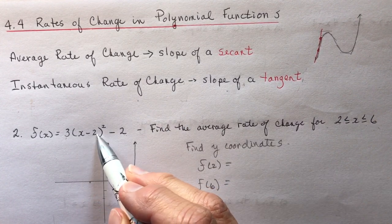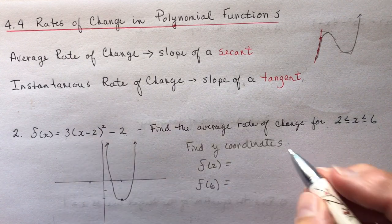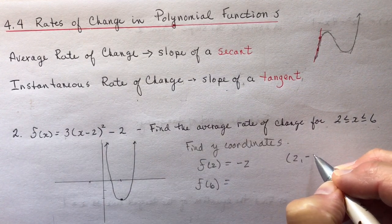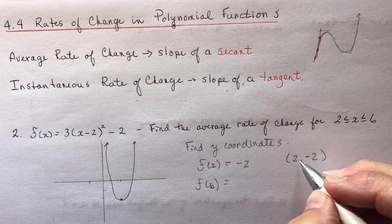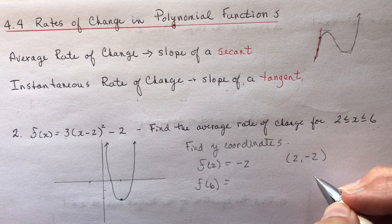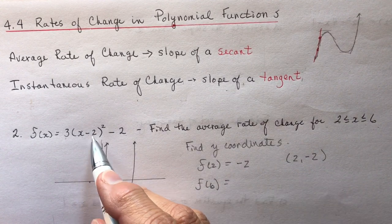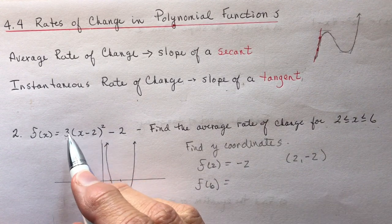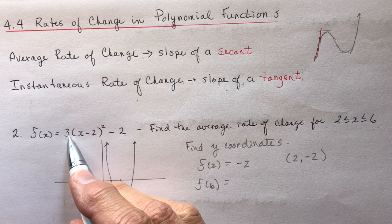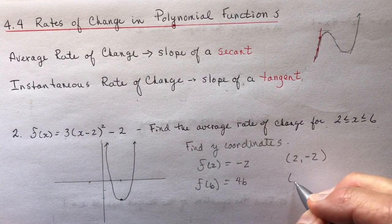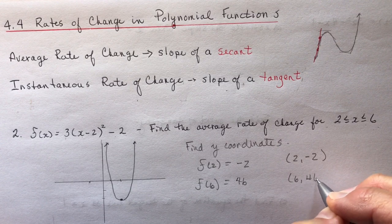So f at 2. 2 minus 2 is 0. Oh, great. 0 squared, 0. So 2 and minus 2. So I'm going to write 2, minus 2. And it's a good idea to write these points out because then you know how to do the slope. f at 6. 6 minus 2 is 4. Squared is 16. Times 3 is 48. Minus 2 is 46. So I have 6 and 46.